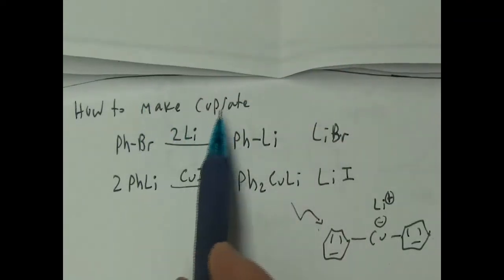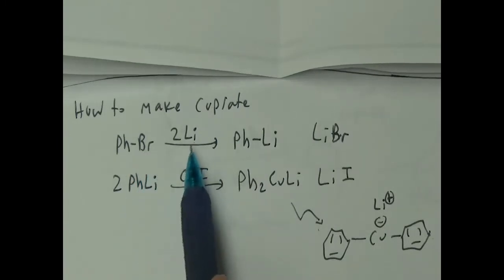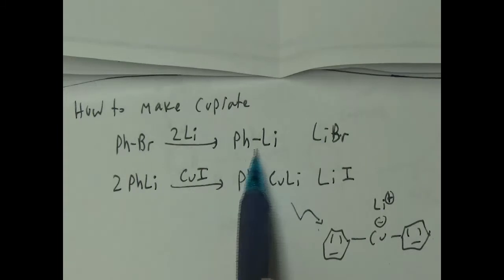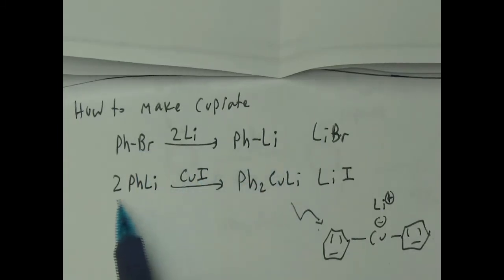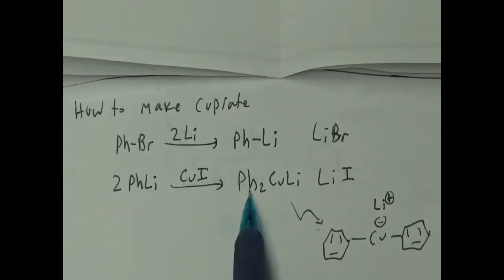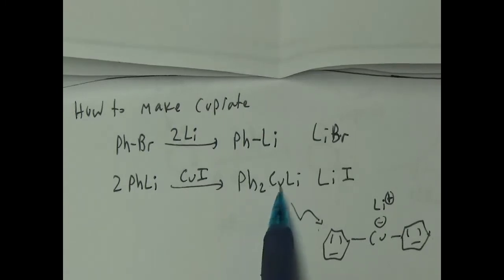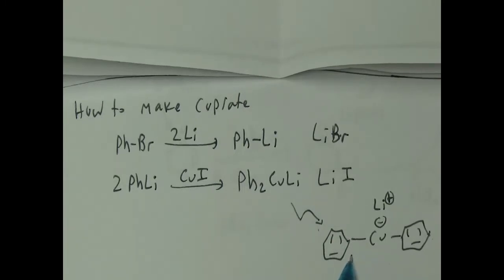We also mentioned how to make cuprates. You just take an alkyl halide or aromatic halide and react with lithium — that gives you the organolithium, basically organic 1 chemistry. Then you react two molecules of the organolithium with copper iodide, which attaches both R-groups to the copper, and you get lithium iodide as a byproduct. That's what Ph₂CuLi looks like — you have two phenyls, copper, lithium.